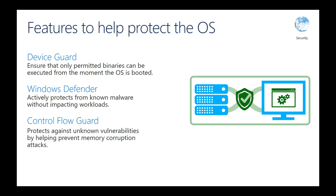And then finally there's something called Control Flow Guard. This is a technology designed to help protect against attacks that haven't been written yet. There are classes of bugs and corruption attacks that try to use parts of memory as ways to attack applications — and we basically shut those down completely. What this does is harden the system further and helps protect even against those types of bad malware applications that haven't been written yet.